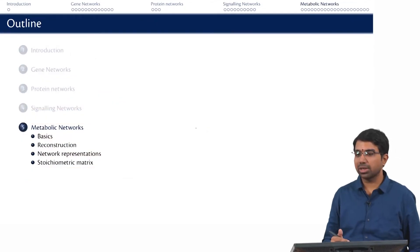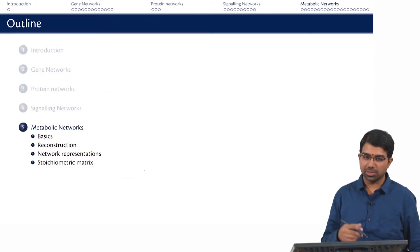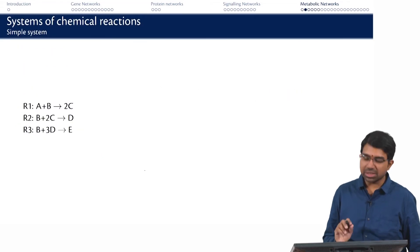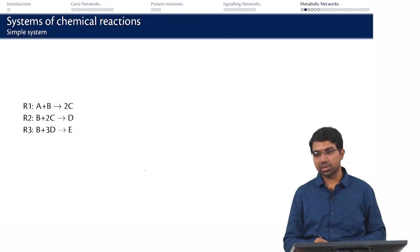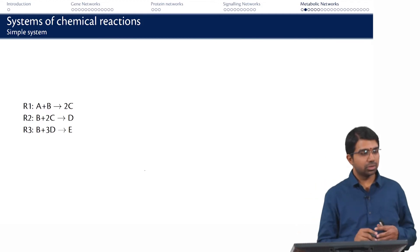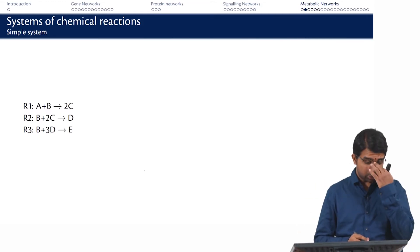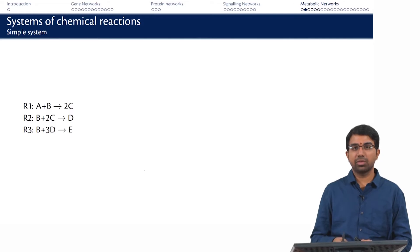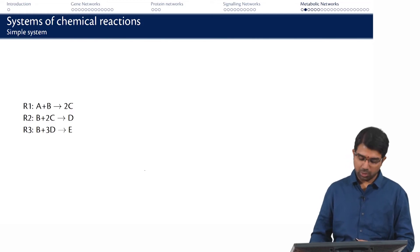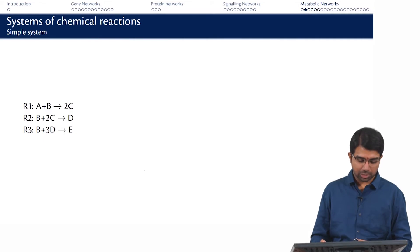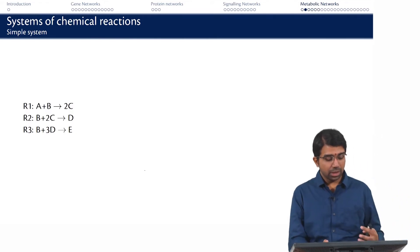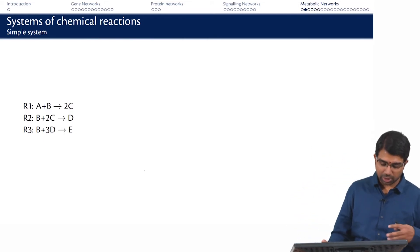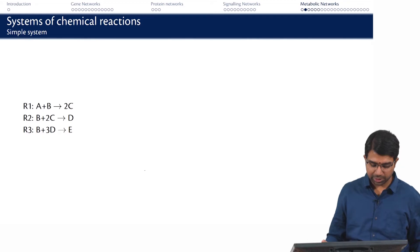Let us look at metabolic networks which will help us better understand the concepts of stoichiometry. This is a simple system of chemical reactions. You have A plus B giving 2C, which means 2 molecules of C are produced from the reaction between 1 molecule of A and 1 molecule of B. Then you have B plus 2C giving 2D, so here the stoichiometric coefficients are different.